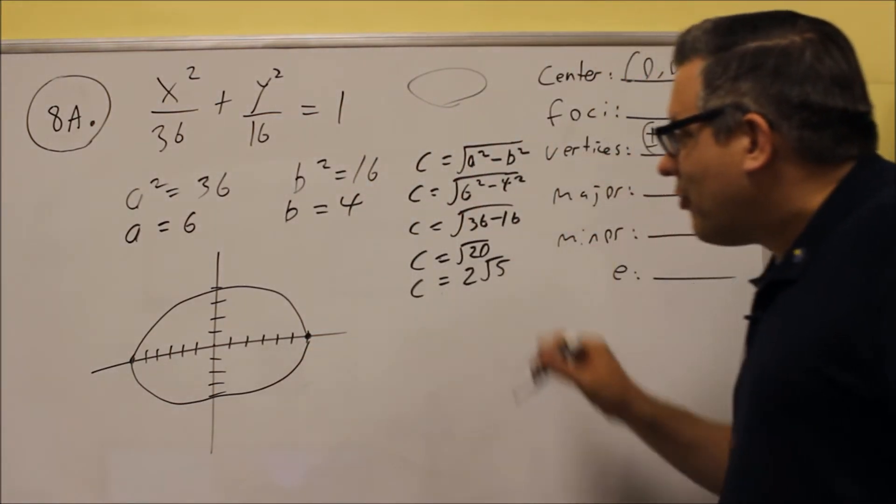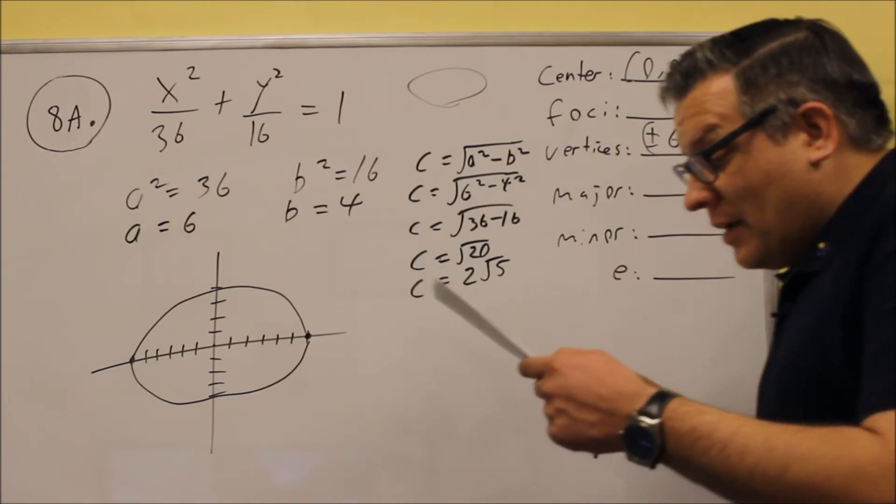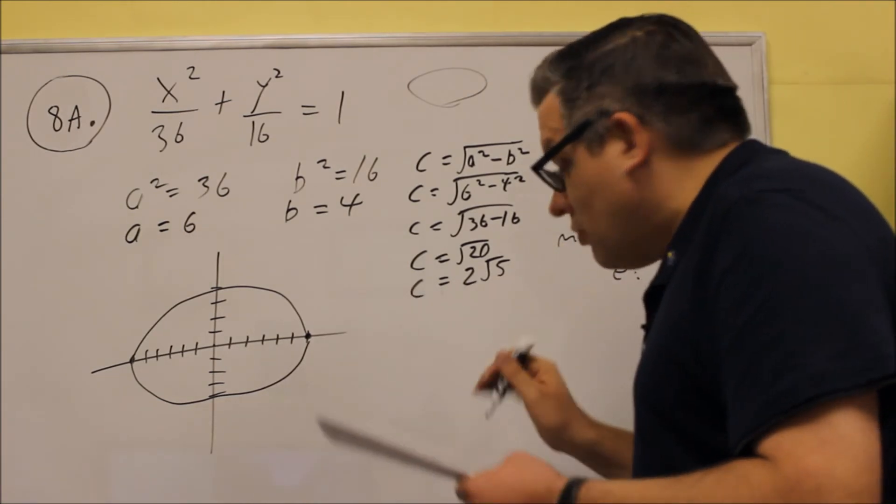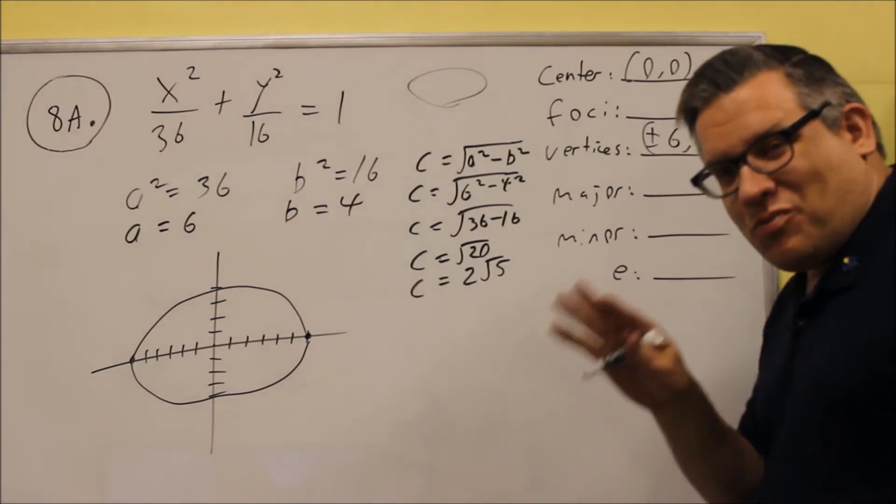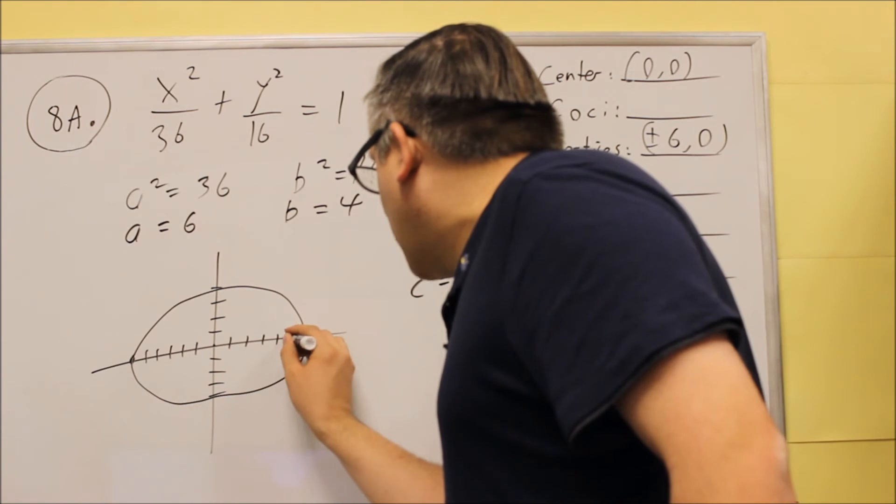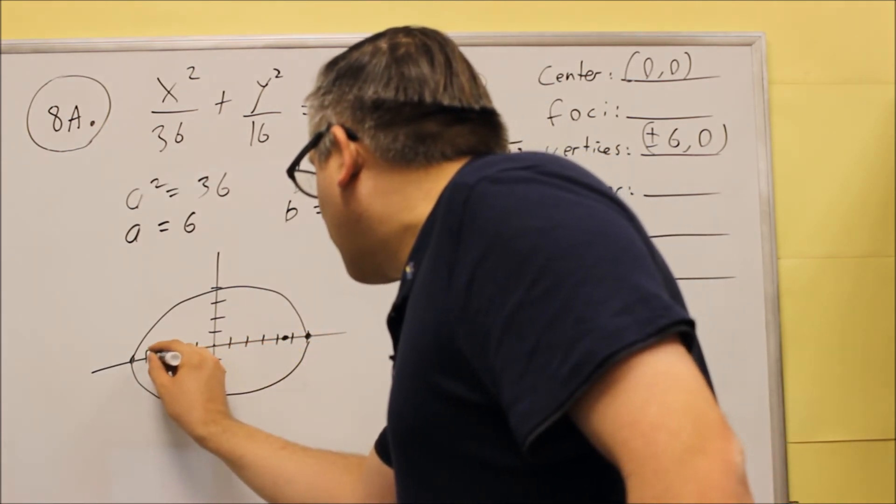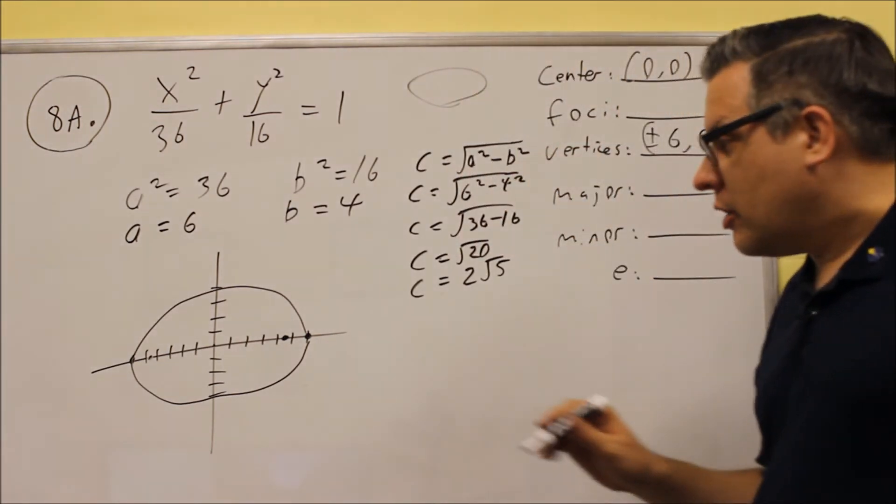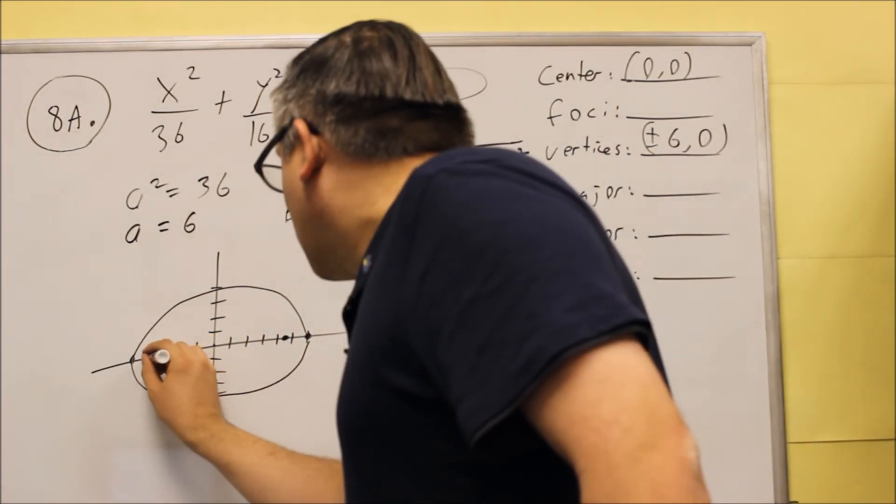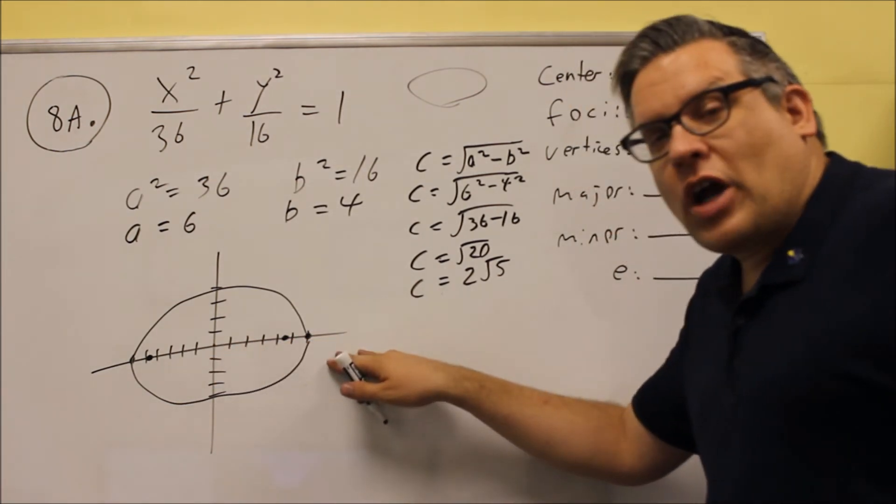Now, what about the foci? The foci, you want to find out what the decimal equivalent is to 2 square root of 5. That's about 4.5 approximately. So what I can do from here is I can go 4.5 here, make a dot, 4.5 the other way, make a dot, 4.5, 4.6, somewhere around there. And I can plot the foci right there. And so that's what it looks like on the graph.